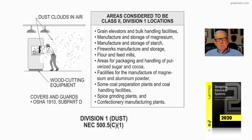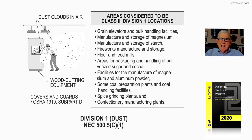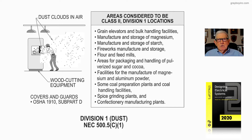In NFPA 499, if you can stick your thumb out and see it, you're usually not in an explosive area due to a dust cloud. If you can see visibility of 3 to 5 feet and make out equipment and people walking around, you're usually not in an area considered explosive due to dust.